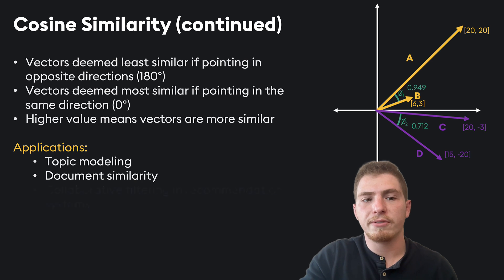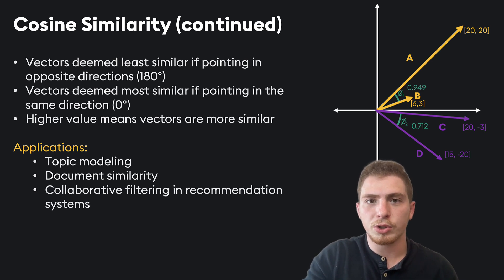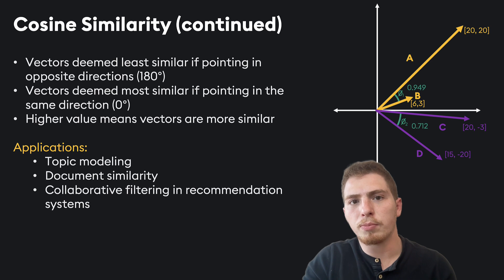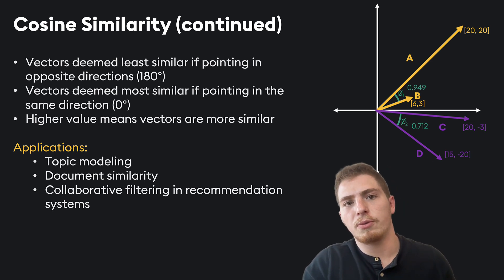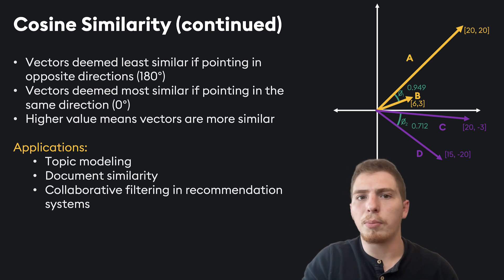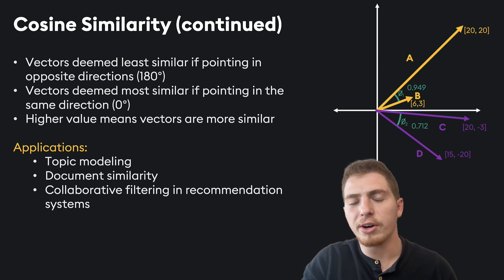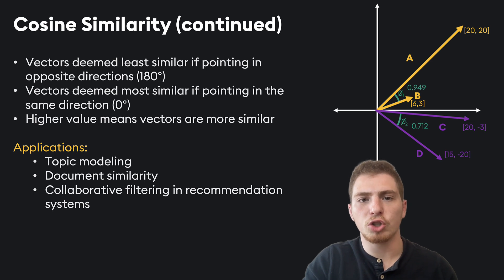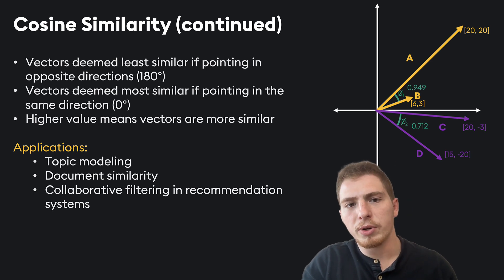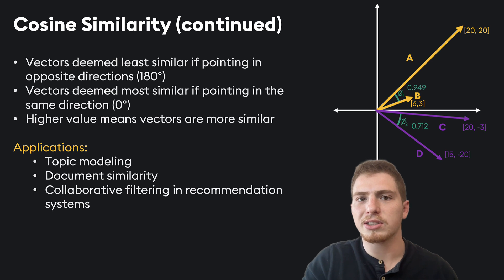Another application is collaborative filtering, which is used in recommendation systems. The resulting vectors have some representation of semantic ideas but also the strength or popularity of individual objects or documents. For example, in a collaborative filtering system based on movies, vectors would represent both the meaning of the movies and how popular people found them. Cosine similarity will focus more on the conceptual similarities between movies and less on the actual score they received, so you can find similar movies without being overwhelmed by highly popular but less relevant ones.